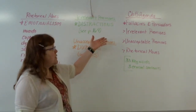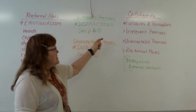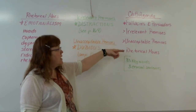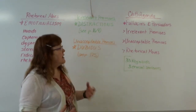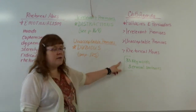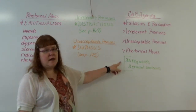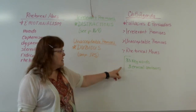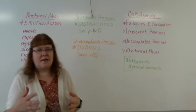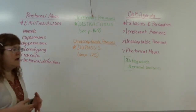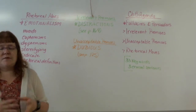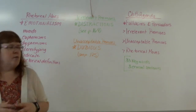Chapter 5 is Fallacies and Persuaders — two sets of two different kinds of fallacies. Some are irrelevant premises, others are unacceptable, and then the last part of the chapter is all about rhetorical moves. In this chapter, we have 33 vocabulary words. Obviously, not all of those are going to end up on the test. We have three crucial sentences, no big words. Chapters 4 and 5 are not difficult, but there's a lot of information, so I put them together for one test, and then we kind of move on.